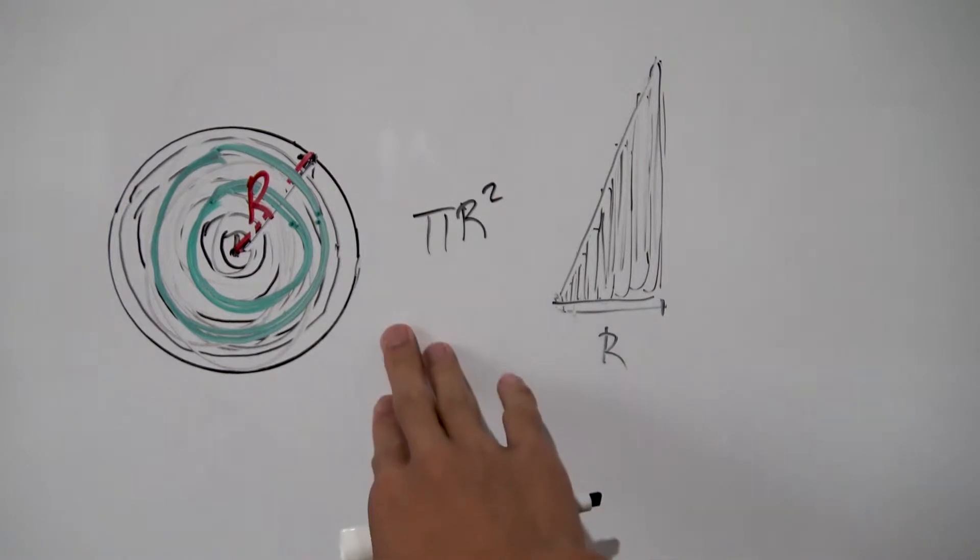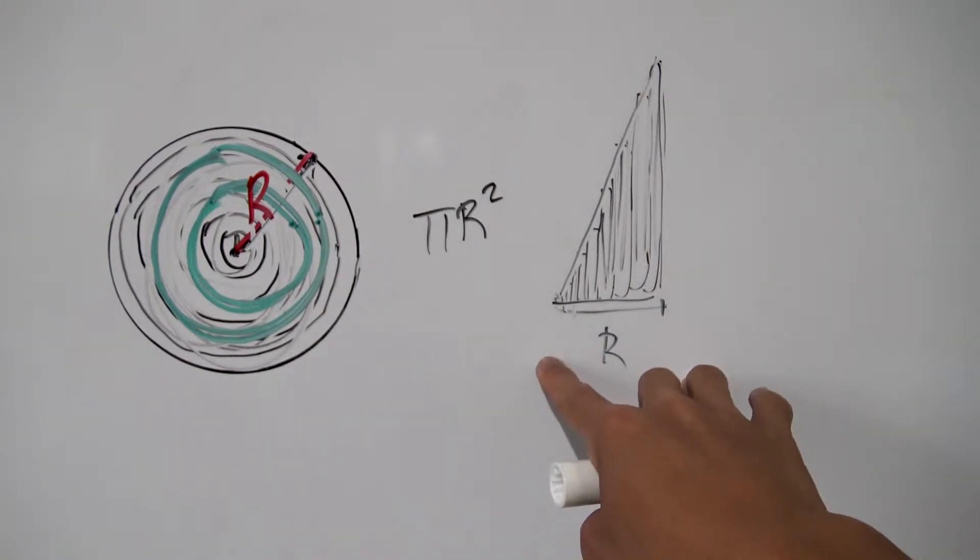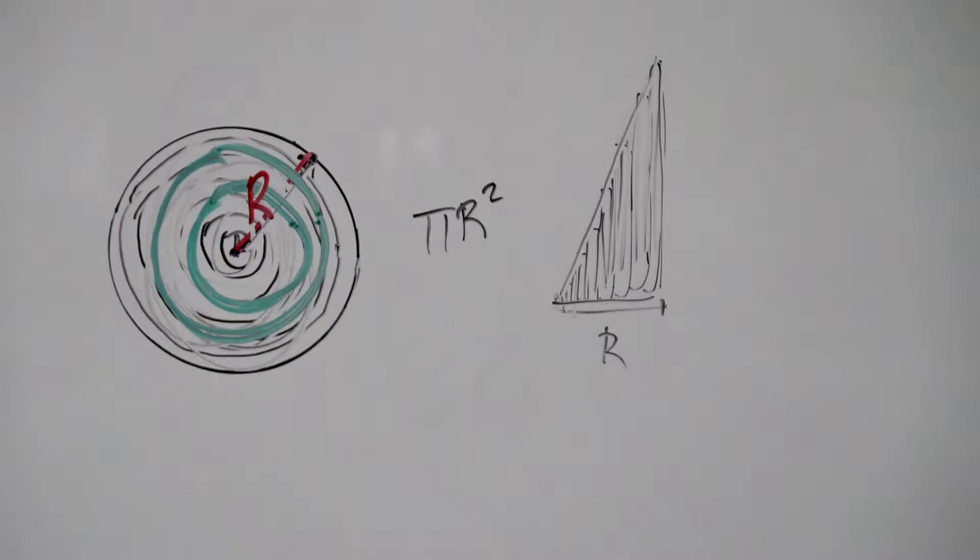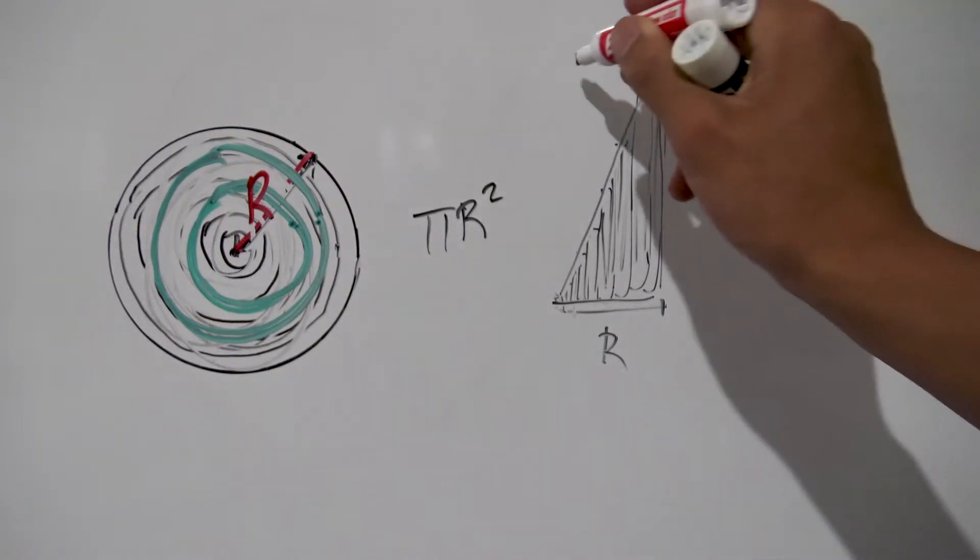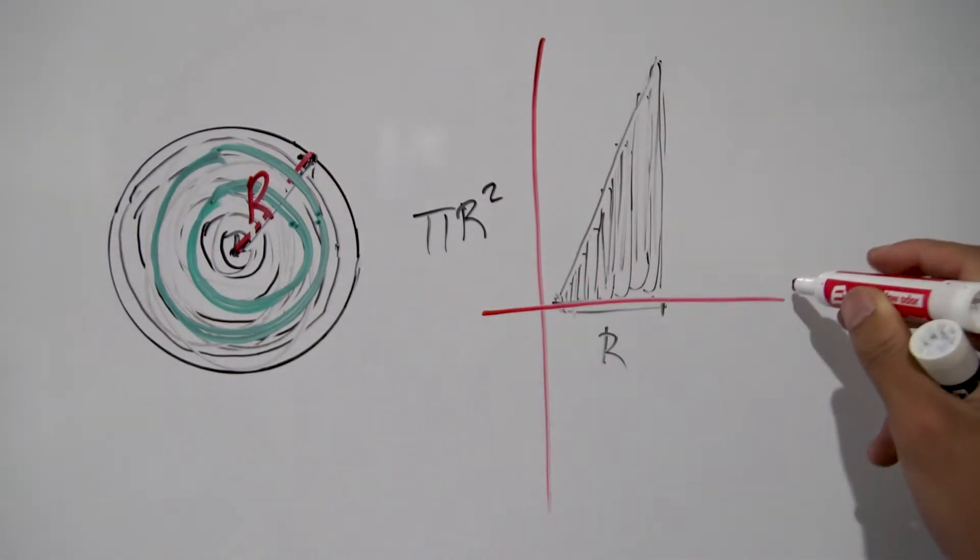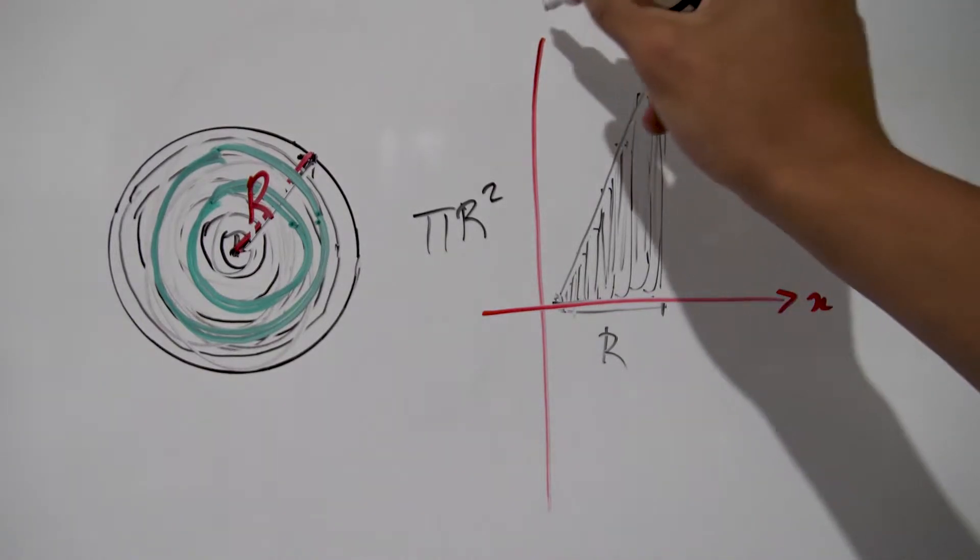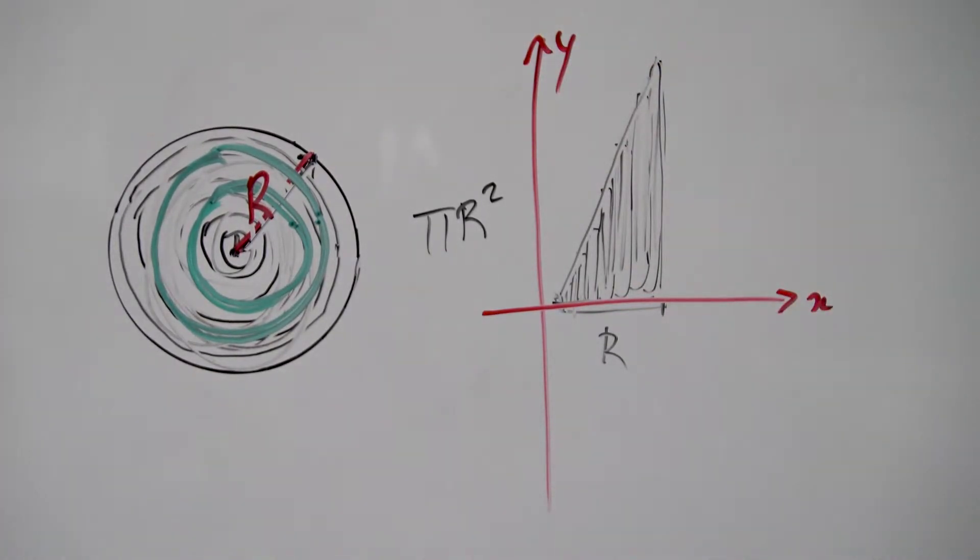And it might be weird thinking of how to get from a circle to a right angle triangle. So I think the best way to show this is to slap on some axes here. So let's call this axis the x-axis and the y-axis. And we want to find the equation of this line right here.